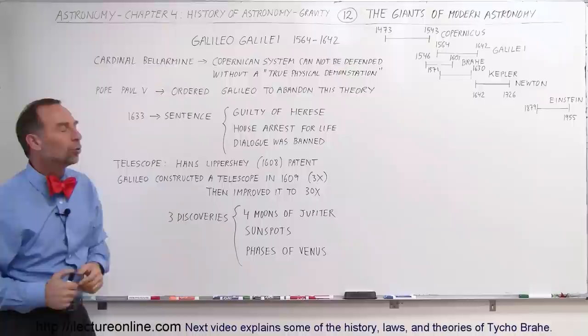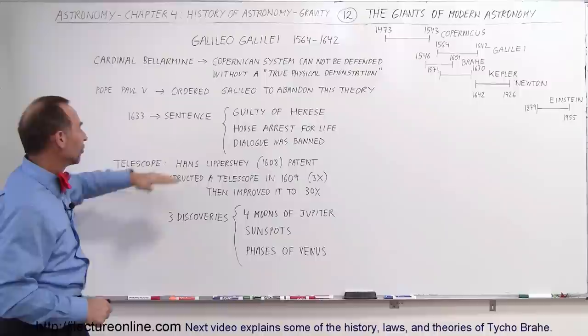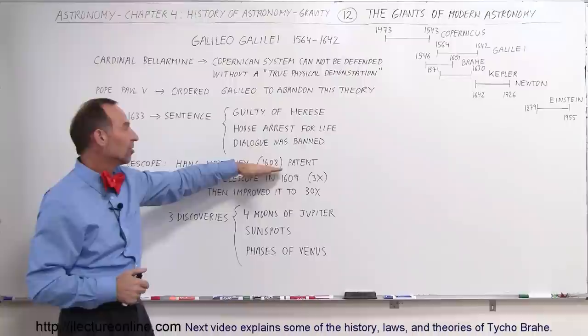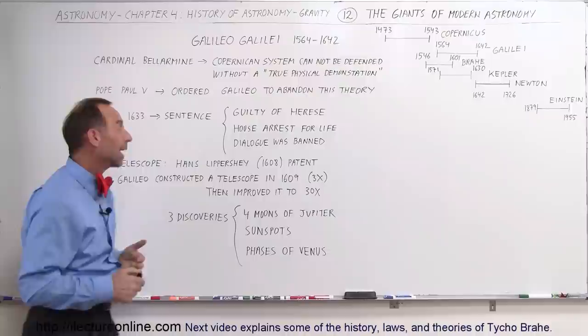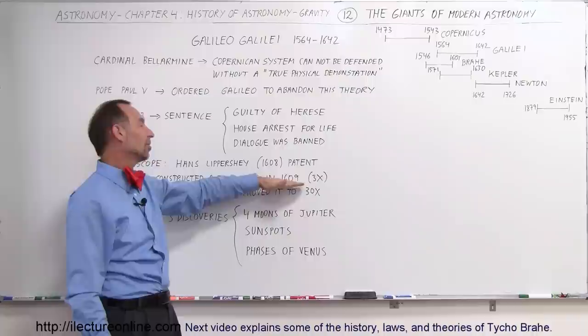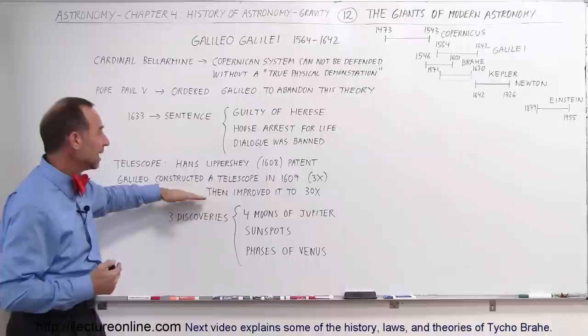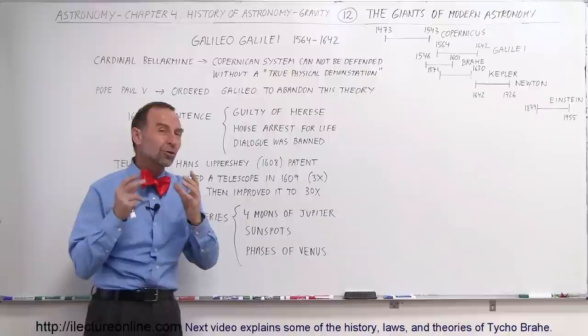In 1608, a Dutch scientist designed a telescope and got a patent for that design. Galileo found out about it in 1608, then decided to construct one. In 1609, he succeeded in putting a telescope together that had a 3x magnification. He then improved that to about 30x. When he took his new telescope with 30x magnification and looked at the planets...